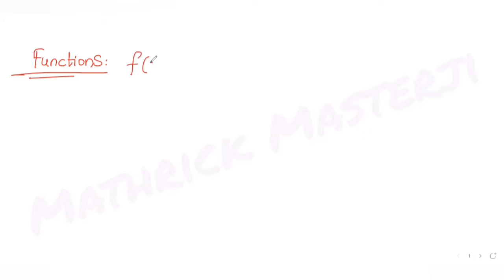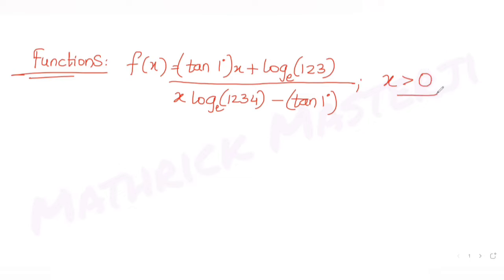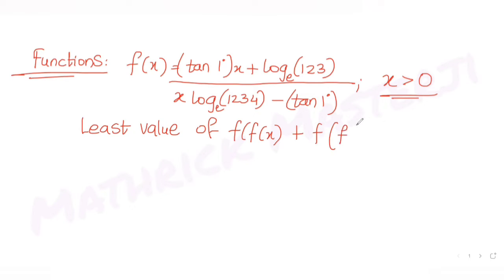Today's question is from the topic of functions. The function f(x) is equal to tan(1°)·x plus log(123) base e, divided by x·log(1234) base e minus tan(1°), where x is positive. We have to figure out the least value of f(f(x)) plus f(f(4/x)).